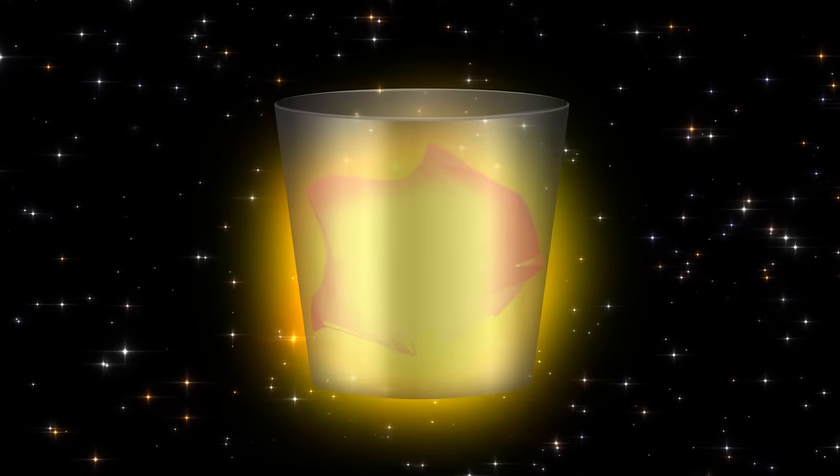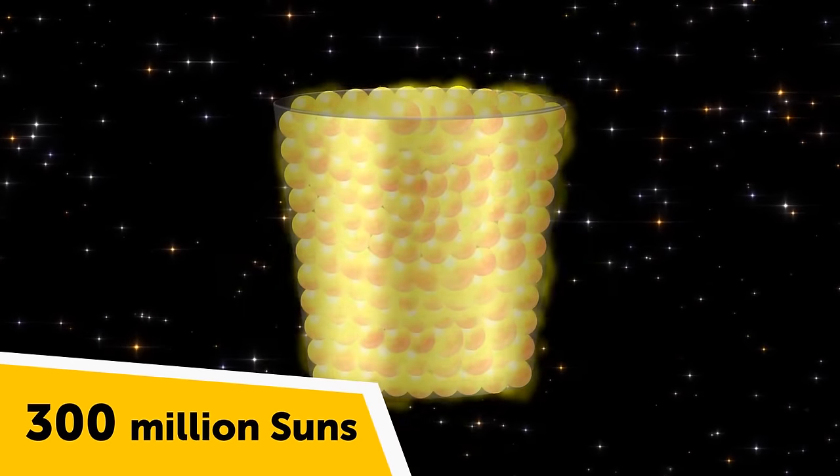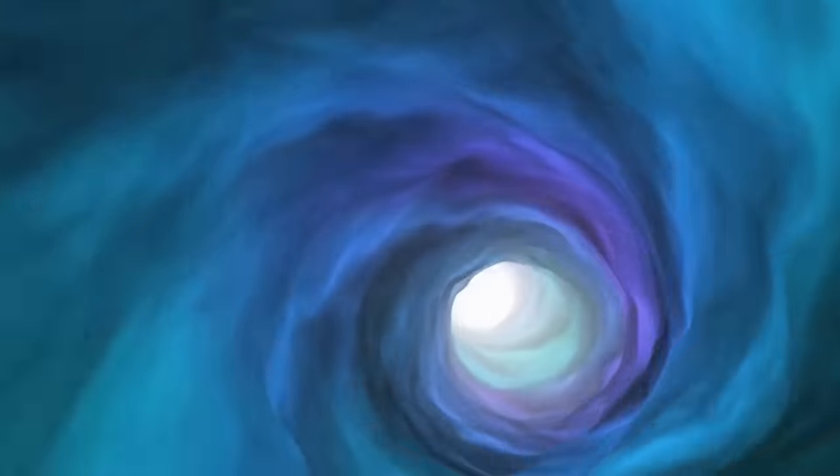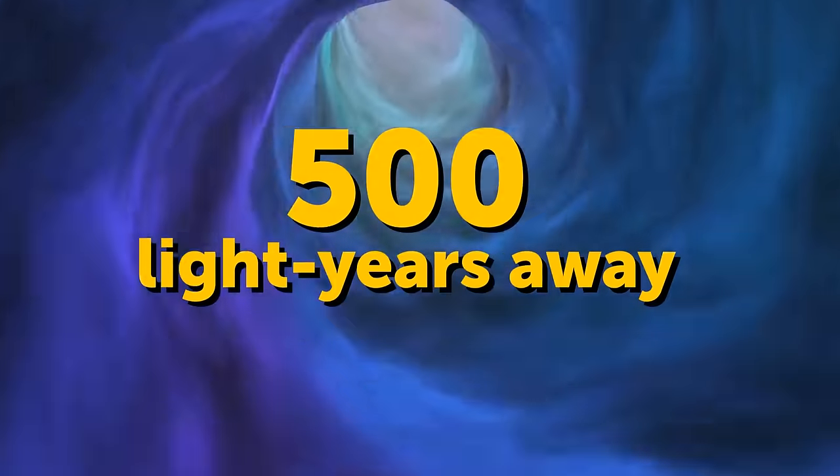If Earth were to move only 900,000 miles closer to the sun, then it would be uninhabitable. It may seem like a lot, but it's only four times the distance between the moon and Earth.